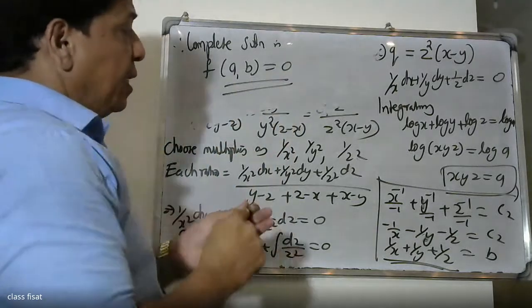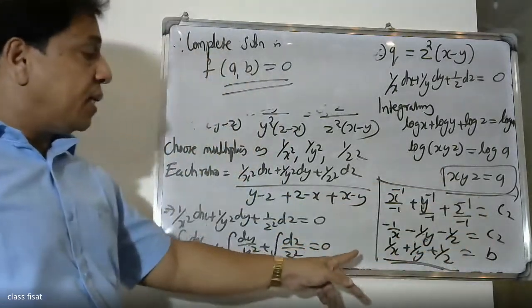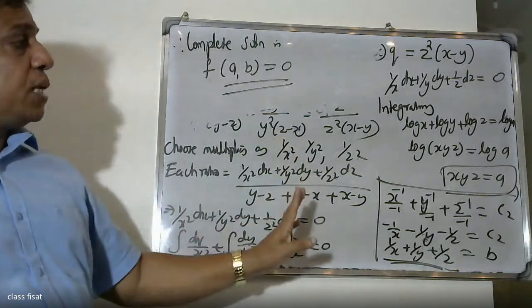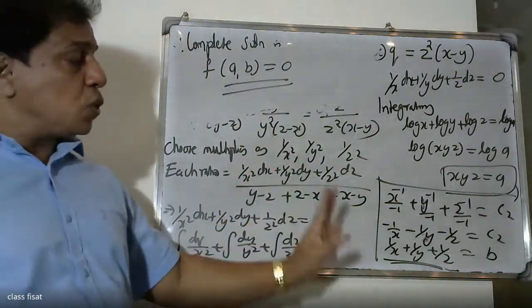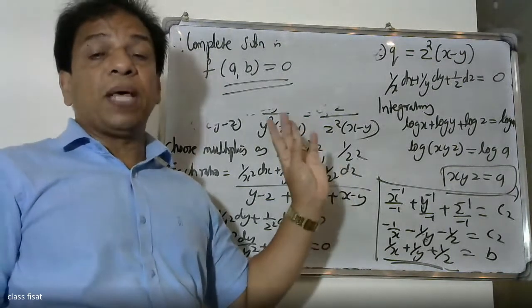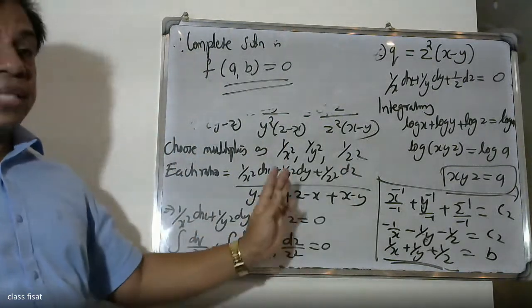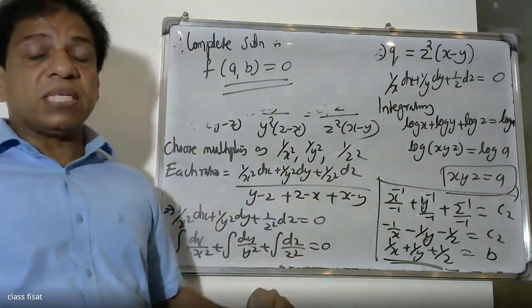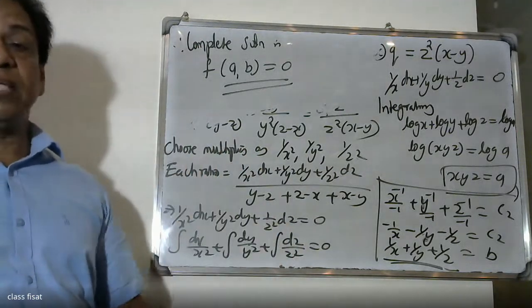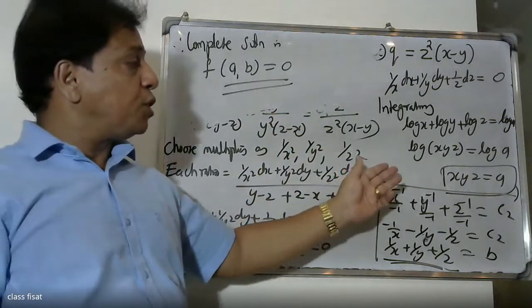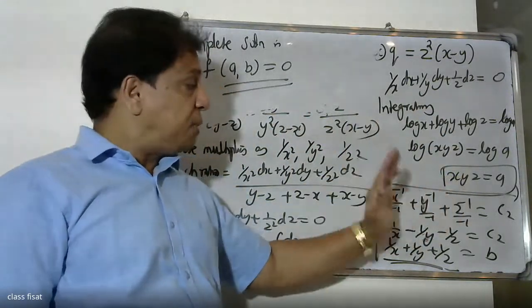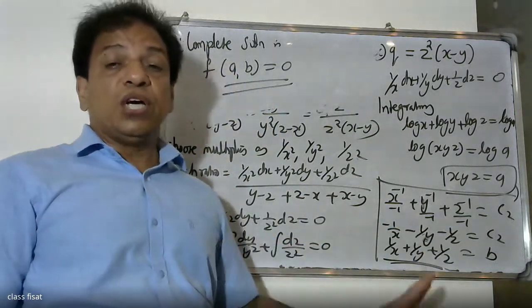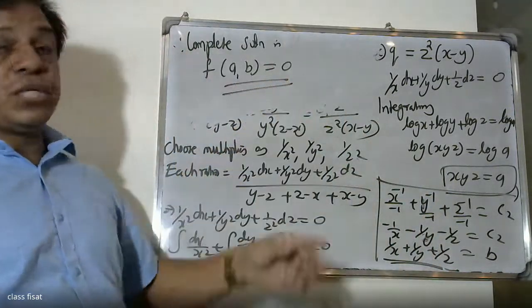That is, a equals xyz and b equals 1/x plus 1/y plus 1/z. Therefore our complete solution is f(a, b) equals zero, where a equals xyz and b equals 1/x plus 1/y plus 1/z. We obtained two constants using the multiplier method: first with multipliers 1/x, 1/y, 1/z giving xyz equals a, and second with multipliers 1/x², 1/y², 1/z² giving 1/x plus 1/y plus 1/z equals b.